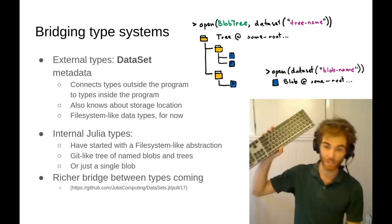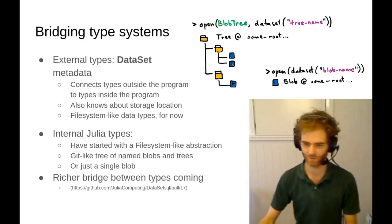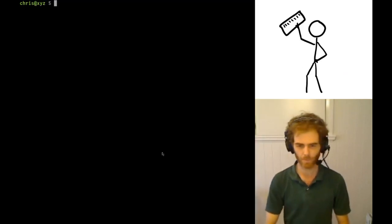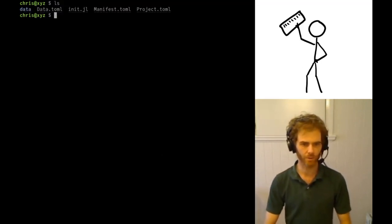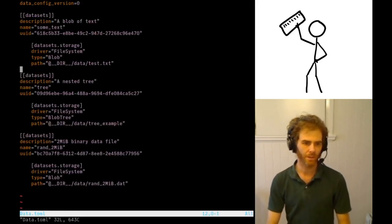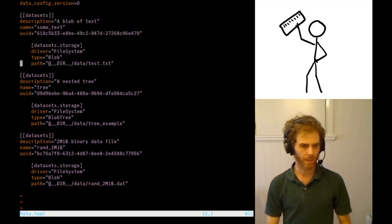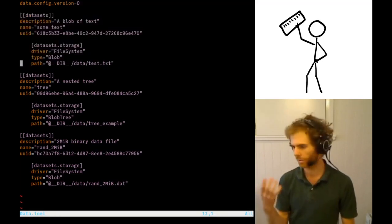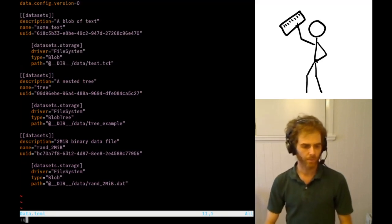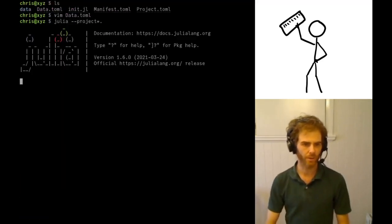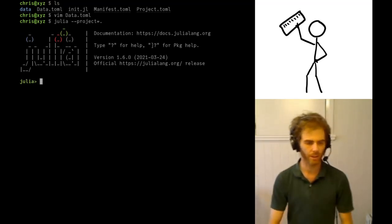So now it's time for a super quick demo. Let's open up a REPL. So I've got a Data.toml here. I've got several things. I've got a project manifest and I have a Data.toml next to them. So let's have a quick look in here. I've got three different datasets. There's one of them. They have local file paths. These are all on local storage.